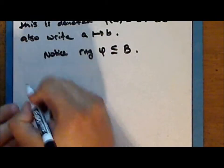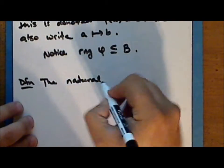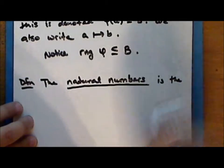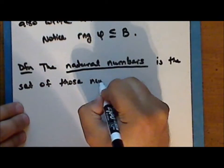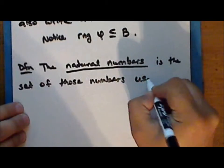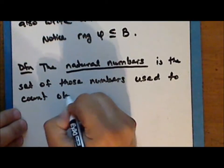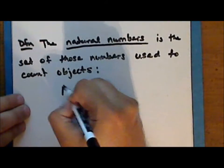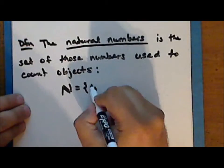We need to begin to consider certain types of sets, in particular sets of numbers. The first set we will define is the set of natural numbers. The natural numbers is the set of those numbers which we use to count objects. The symbol for the set of natural numbers is an ornate or blackboard bold letter N, and it contains the numbers 1, 2, 3, and so on.